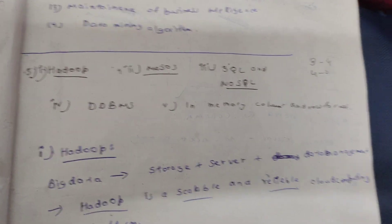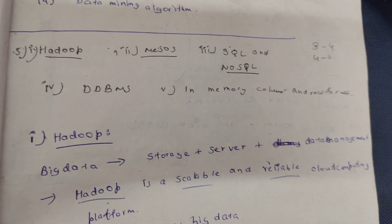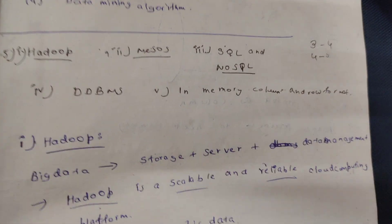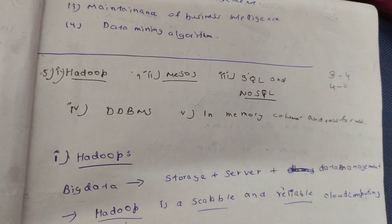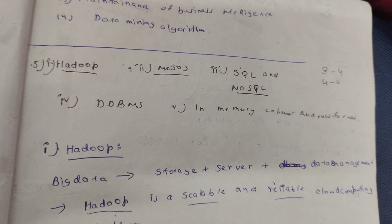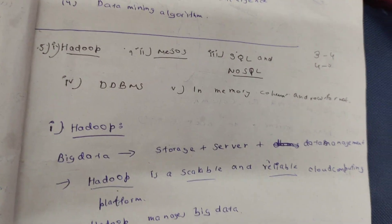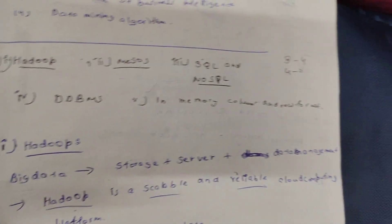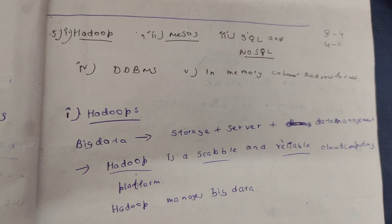The first thing is that you have to learn the meanings of these things: Hadoop, Mesos, SQL, NoSQL, DDBMS, and InMemory Column.